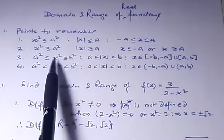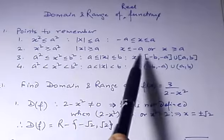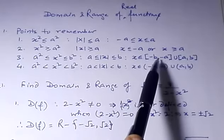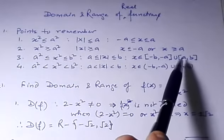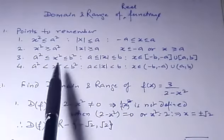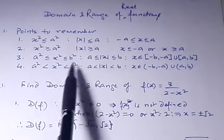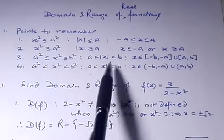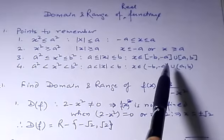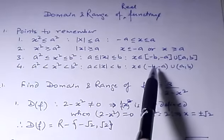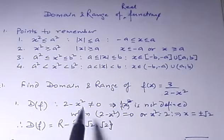Similarly, if x squared is between a squared and b squared, then x will be in the interval minus b to minus a, or in the interval a to b.